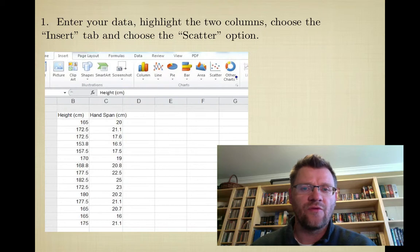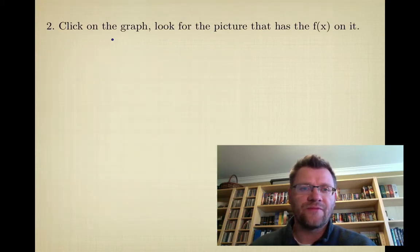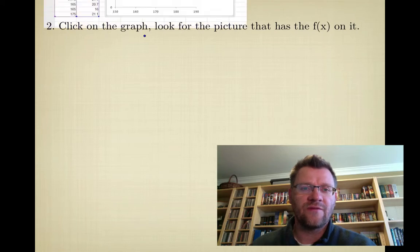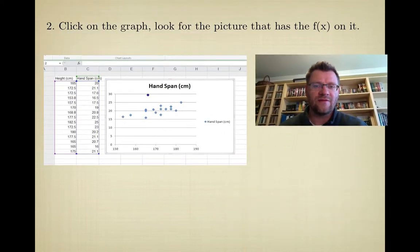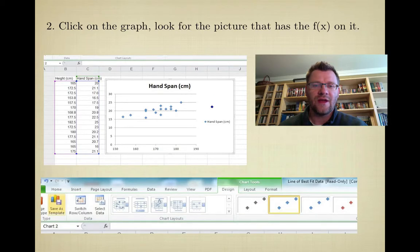When you do that, you need to click on the graph that's made and it'll look like this: hand span with all the dots of all this data. You can see they've done the height across the bottom and the hand span across the vertical axis.